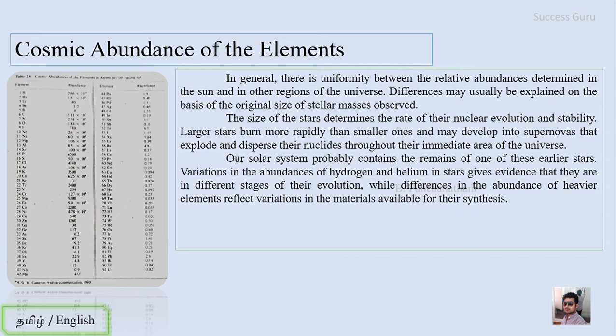The sun is one of the earliest stars. Variation in the abundance of hydrogen and helium in stars gives evidence that they are in different stages of evolution. If a star has more hydrogen, it may be a bigger star. If it has more helium, it is mostly an older star. The reason that the sun has heat and light is the nuclear fusion reaction.